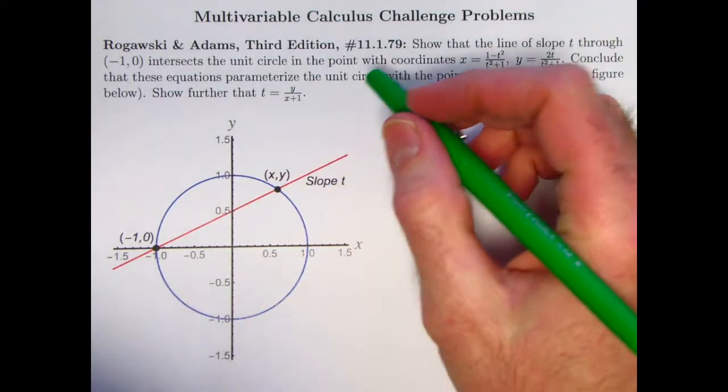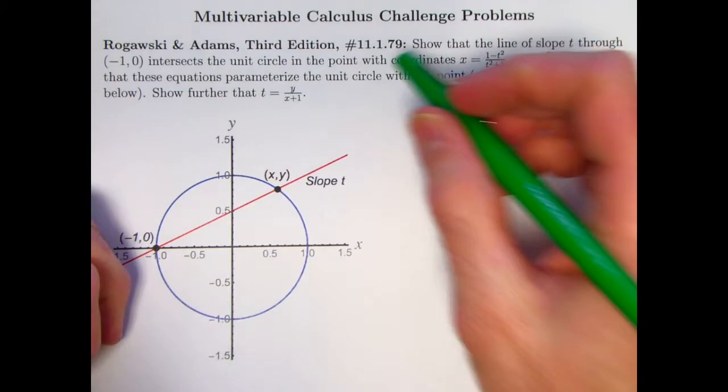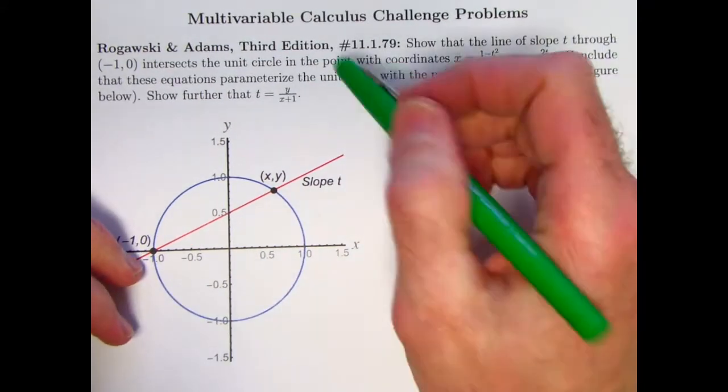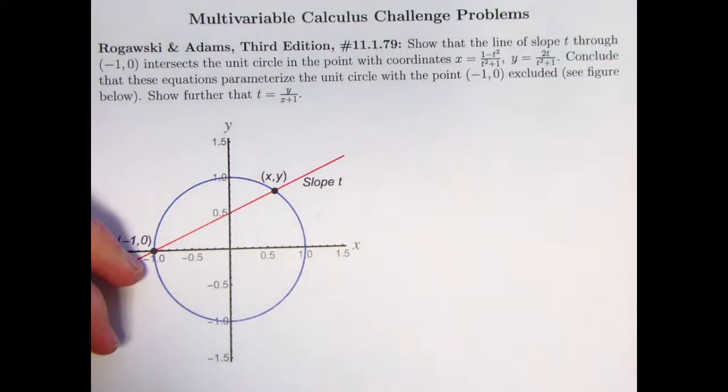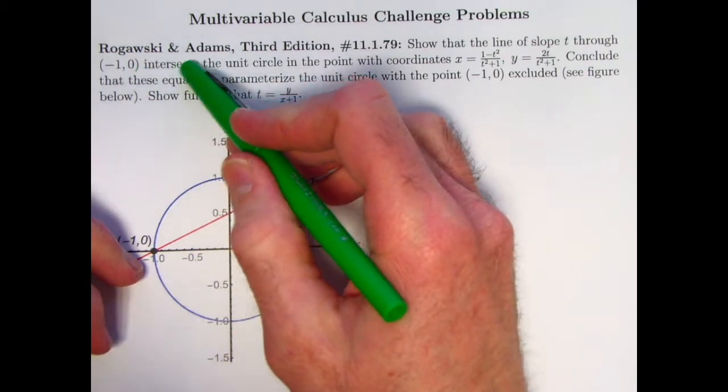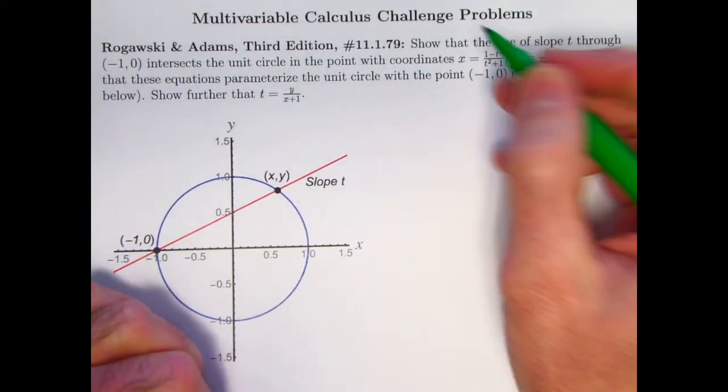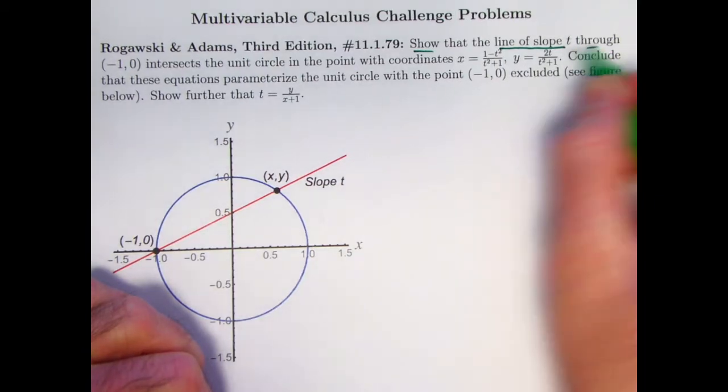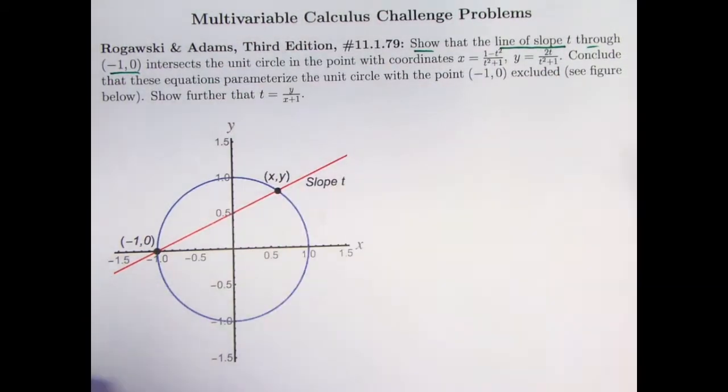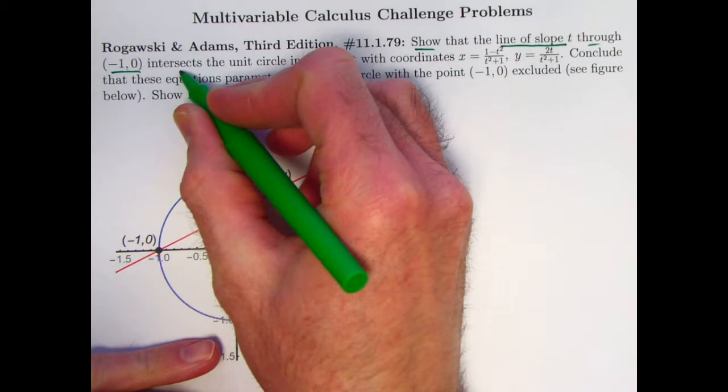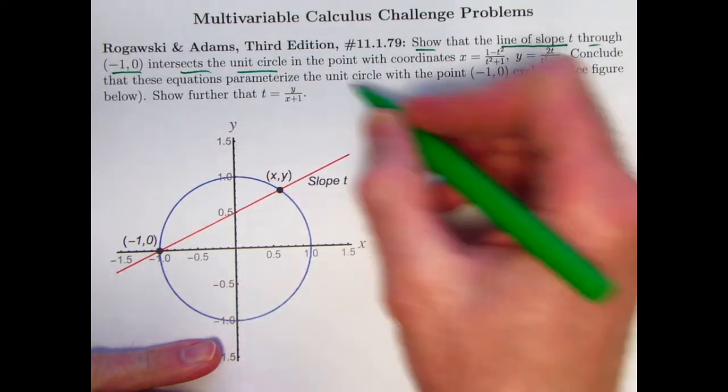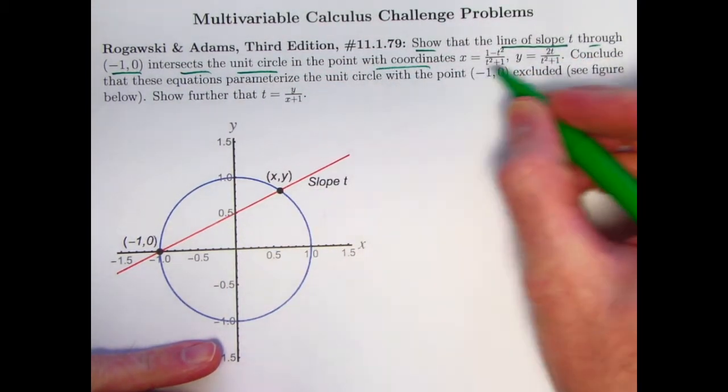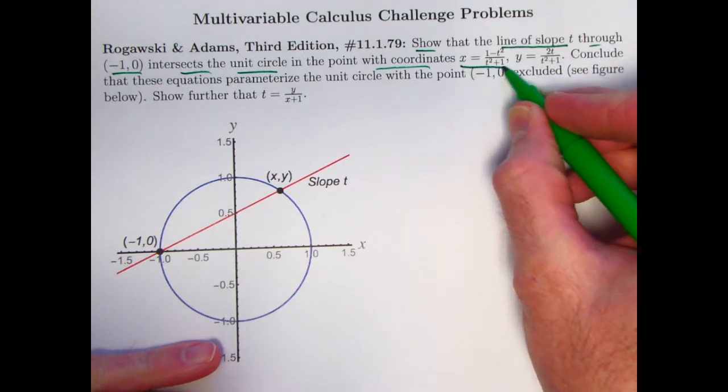In this video about multivariable calculus challenge problems, we'll be looking at problem 79 from section 11.1 of the Multivariable Calculus book by Rogowski and Adams, third edition. The problem says to show that a line of slope t through the point (-1,0), like you see here in this picture, intersects the unit circle.